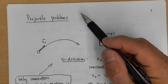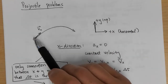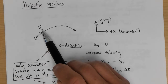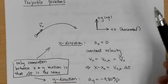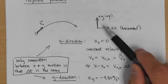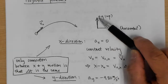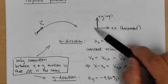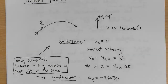We're starting off with projectile problems. In a projectile problem, we have some object with initial velocity v₀. y is the positive up direction, and positive x is horizontal.